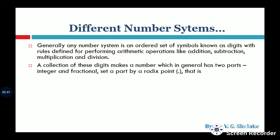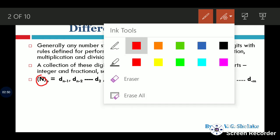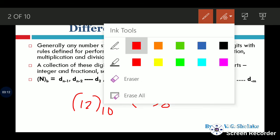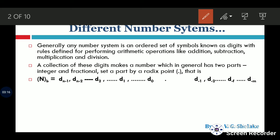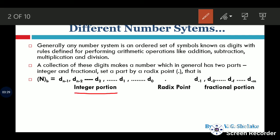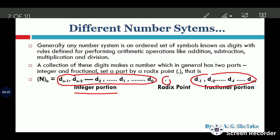If N_b is the number, then b is the radix or base of that number. For example, if the base is 10, we write 12 with base 10. If it is an octal number, for example 63, the base will be 8. The integer part extends from the radix point to the left, and the fraction part extends to the right.